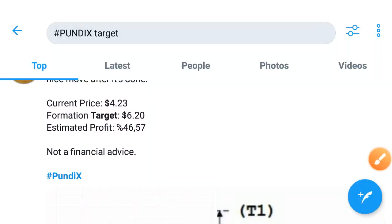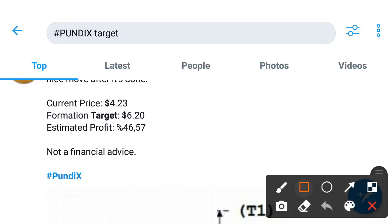Hey what's up Pondyx holders, today we'll discuss the next target of Pondyx. The current price is $4.23 USD for one Pondyx. The formation target is $6.20 USD.